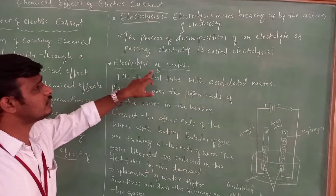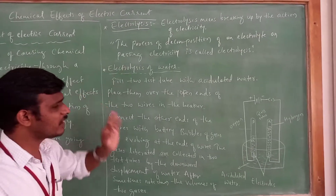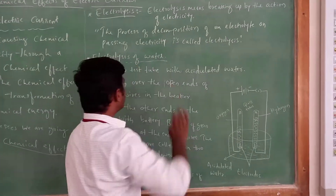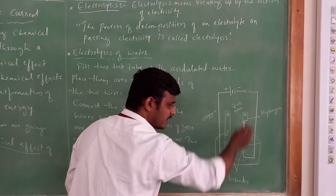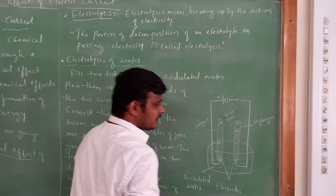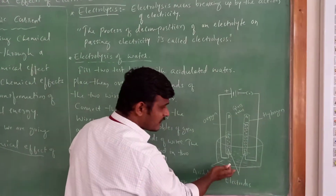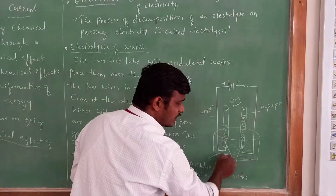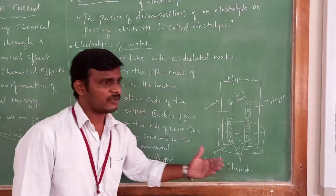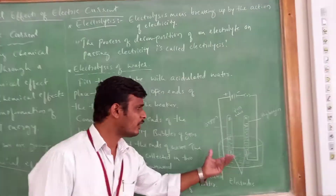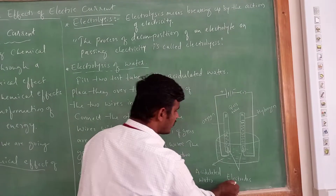We are going to study the electrolysis of water — this is an activity in your textbook. To do this activity we require a beaker, two glass test tubes, a battery, a plug key, and thick copper wire. We use acidulated water solution because if the water is pure, electricity will not pass through it. That is why we use acidulated water for this electrolysis of water activity.